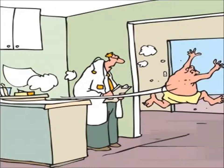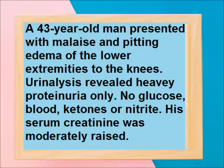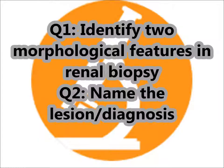The next clinical scenario is about a 43-year-old man presented with malaise and pitting edema of the lower extremities. Urine analysis revealed heavy proteinuria only — no glucose, blood, ketones, or nitrite. The question is to identify two morphological features in the renal biopsy and name the likely diagnosis.